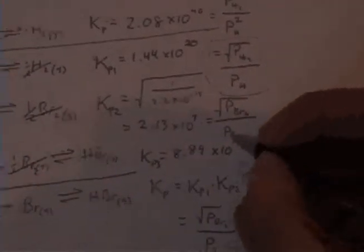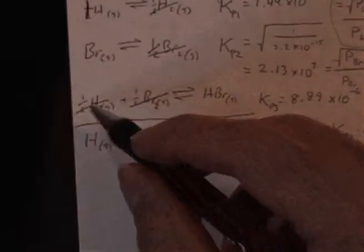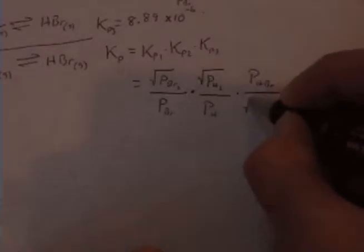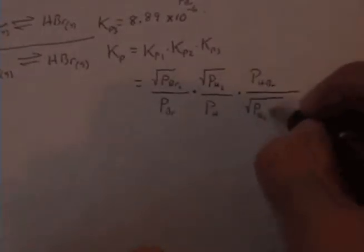...divided by the square root of the pressures of each of those. And I'll just write it like this: PH2 times PBr2.